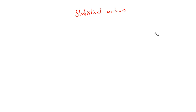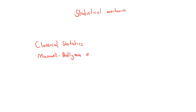We're going to be talking about three kinds of distribution functions. The first is for classical statistics: the Maxwell-Boltzmann distribution function. Then we're going to be talking about quantum statistics, where we have two kinds of distribution functions — one is the Fermi-Dirac distribution function, and another one is the Bose-Einstein distribution function.